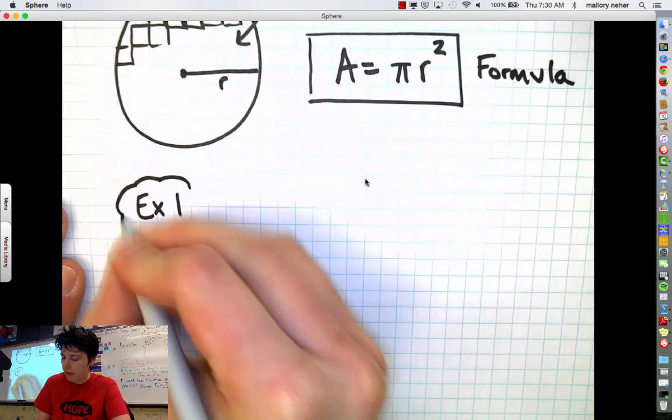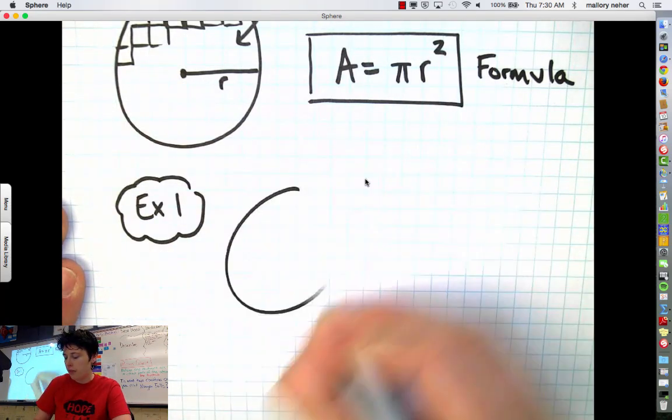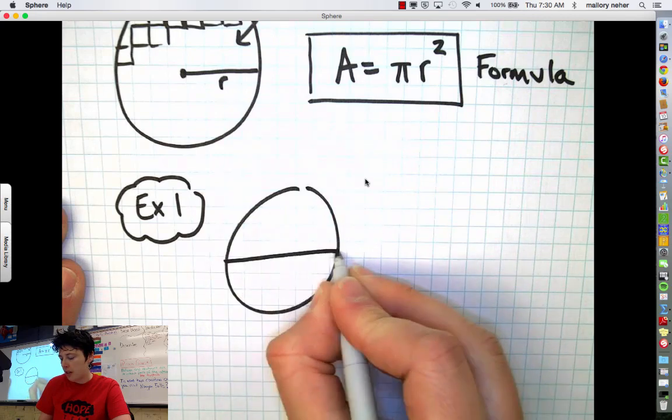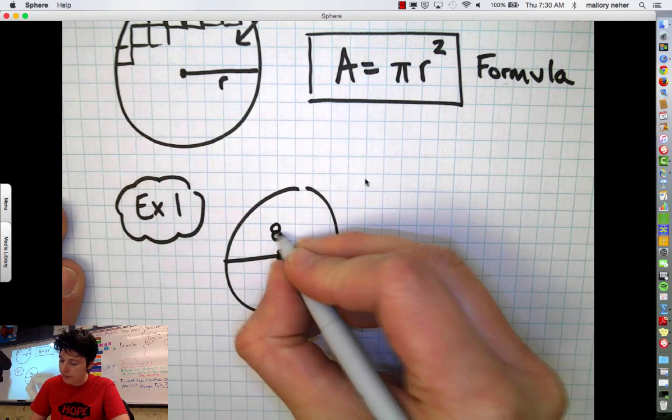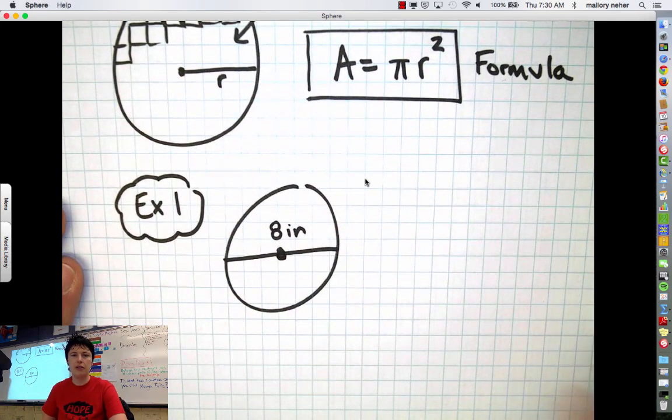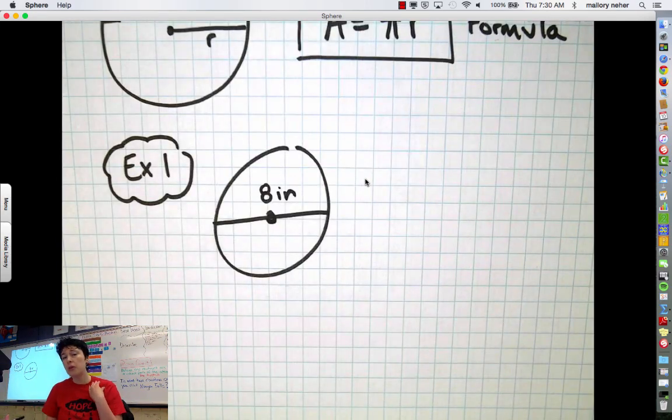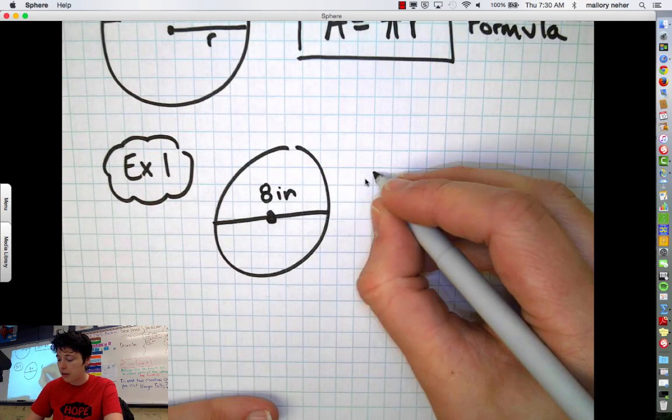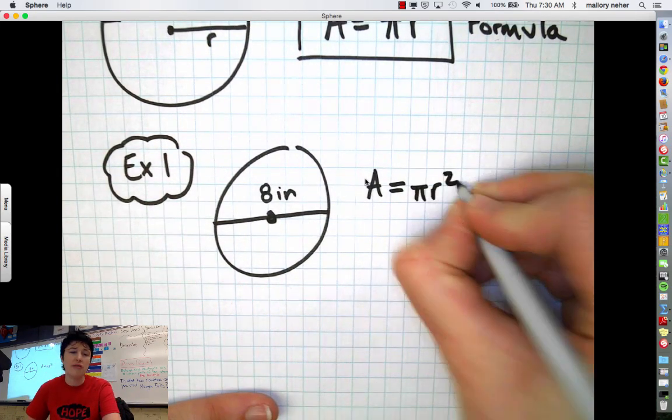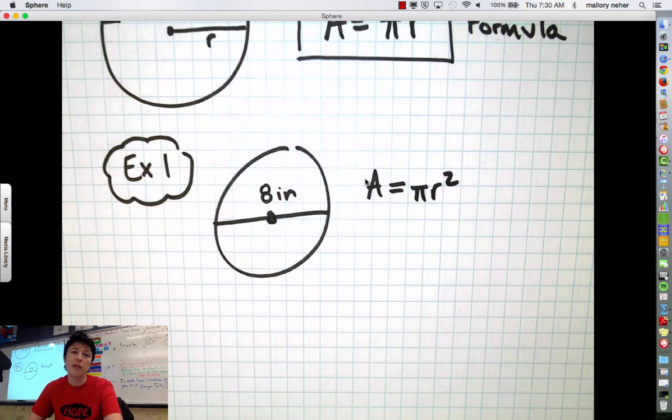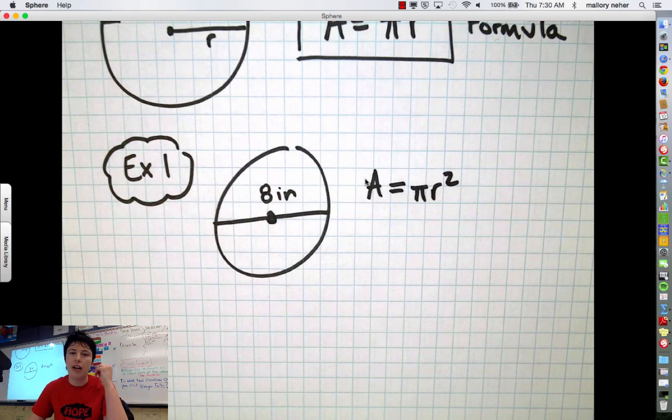And for our first example I'm going to tell you that I have a circle and it measures across with a diameter of, we're going to say, 8 inches. And I want to know what's the area of this circle. So when you tell me I want to know what's the area, I automatically write the formula down. Area equals pi r squared. Truly it's a formula you should memorize. It's one of those ones that just should stick in your head. Pi r squared.